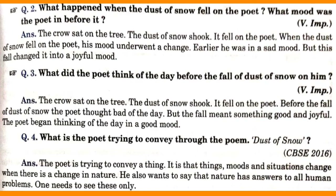Next question: What happened when the dust of snow fell on the poet? What mood was the poet in before it? Answer: The crow sat on the tree and the dust of snow was shaken; it fell on the poet. When the dust of snow fell on the poet, his mood underwent a change. Earlier he was in a sad mood, but this fall changed it into a joyful mood.